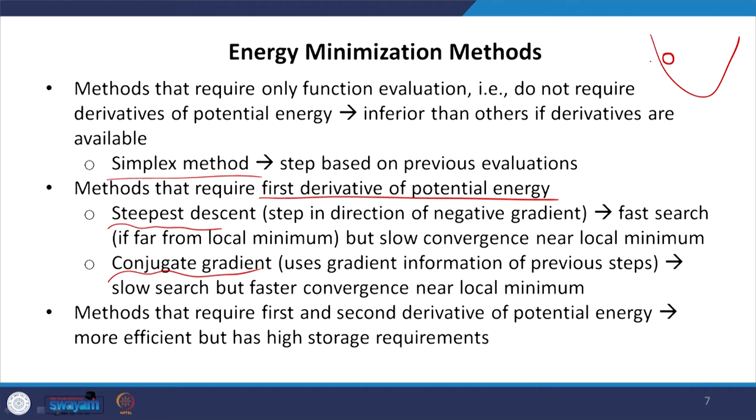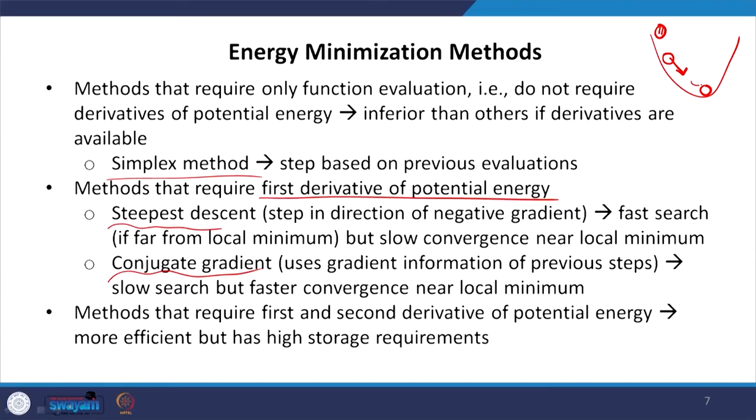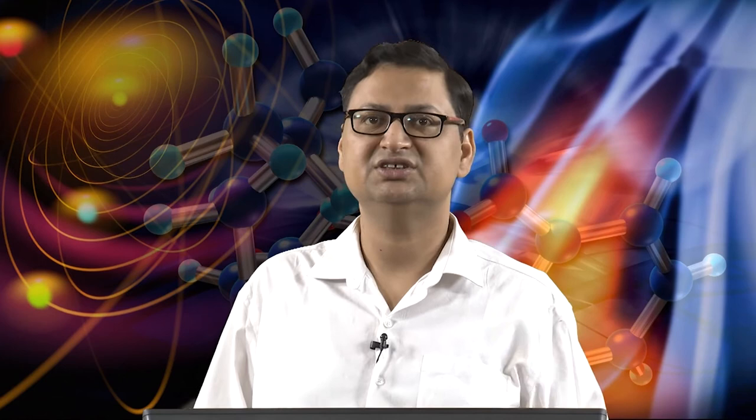For example, if the energy of the system looks like a landscape and we start from some point, the system will tend to go downhill because we follow the gradient — that is the idea of steepest descent. Conjugate gradient is slightly smarter: it also uses the gradient data from the previous step. Steepest descent is pretty good in most cases; it gives a faster search if we are far from the minima but has rather slow convergence near the minima point and may have certain fluctuations around it. In the case of conjugate gradient, the search itself may be slower if we are far from the minima, but the fluctuations are lesser and we typically have faster convergence near the minima.